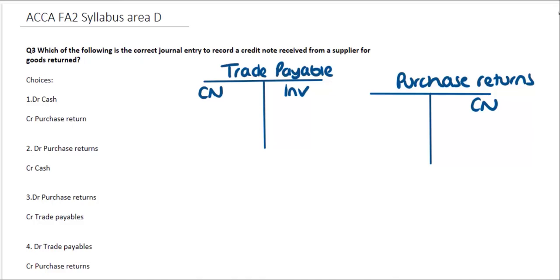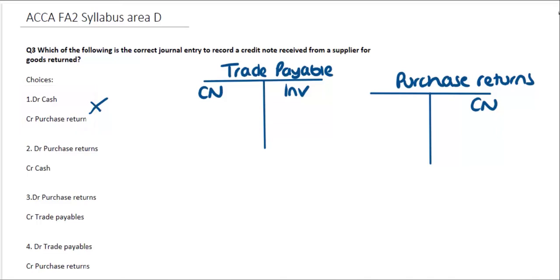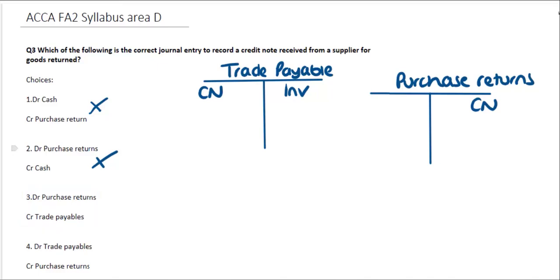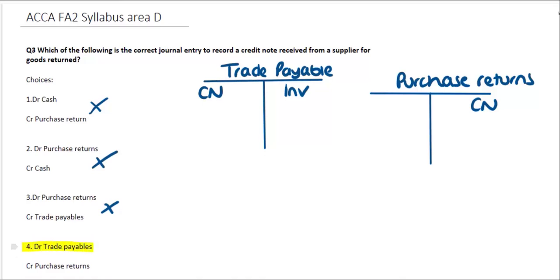Looking at the options available, the first option can't work because it relates to cash and there was no cash transaction here. The second option is also cash, so that's discredited too. The third option — debit Purchase Returns, credit Trade Payables — is the wrong way around, recording it as if it were an invoice. Therefore the fourth option — debiting Trade Payables to reduce the overall liability and crediting Purchase Returns to offset the original purchase — is the correct answer.